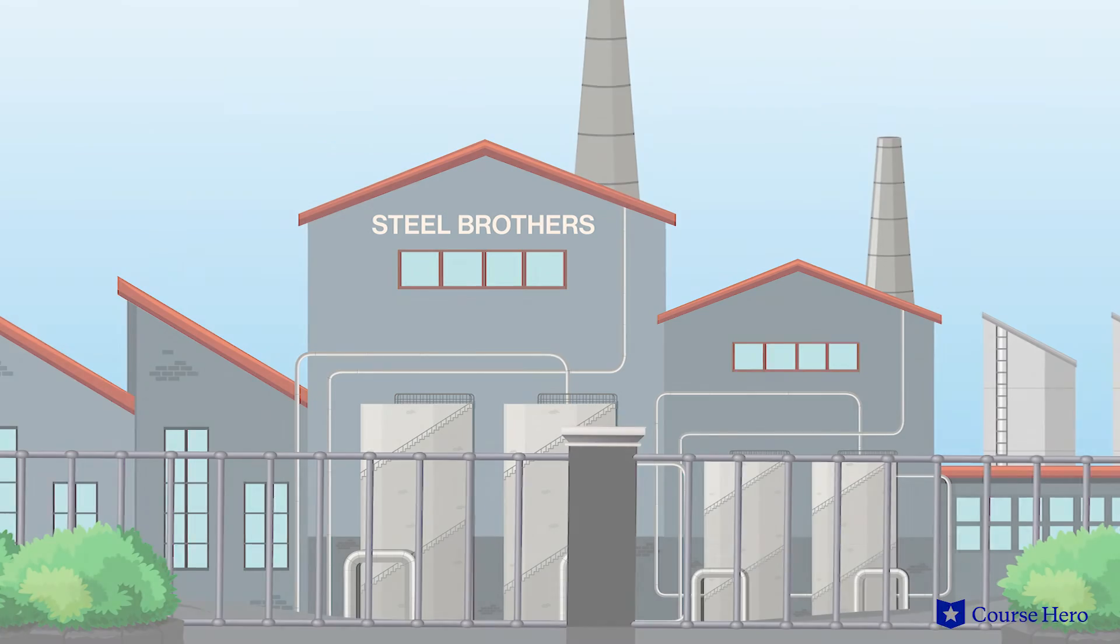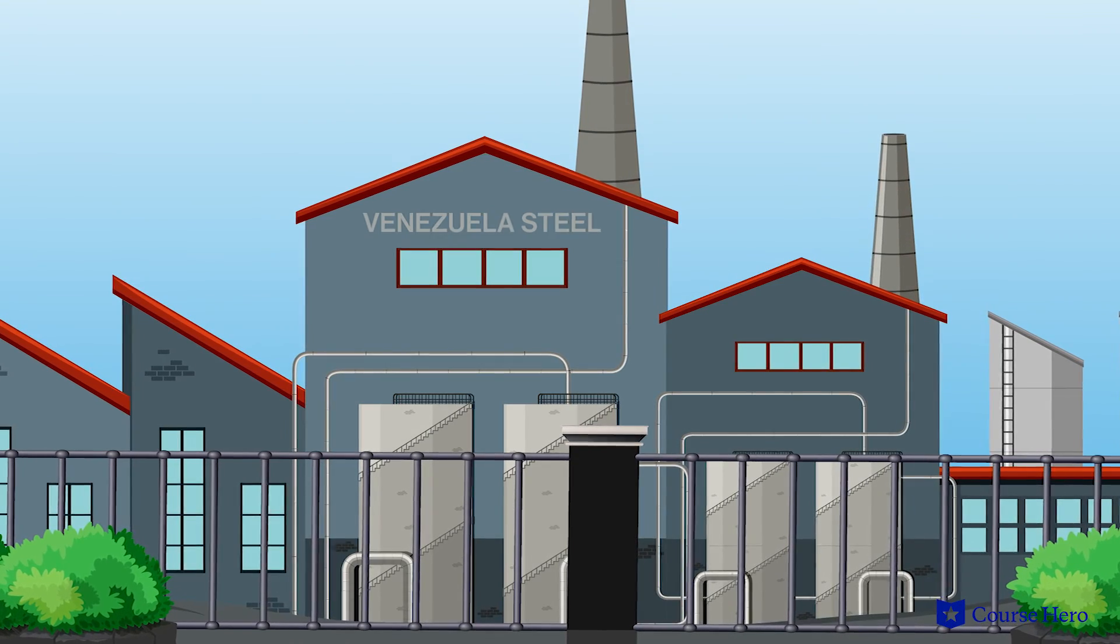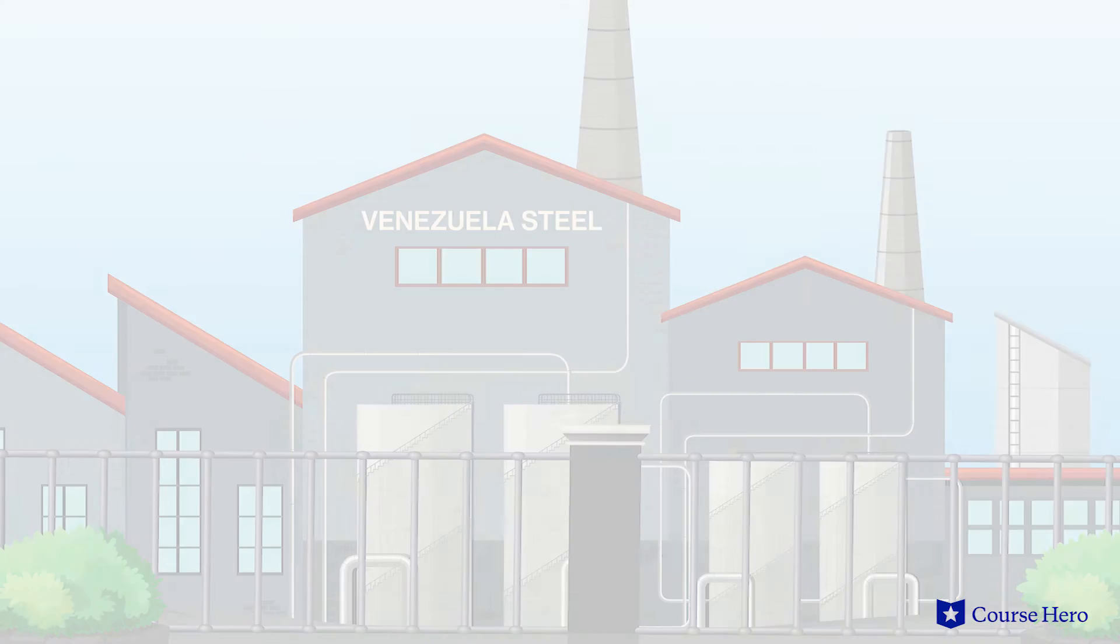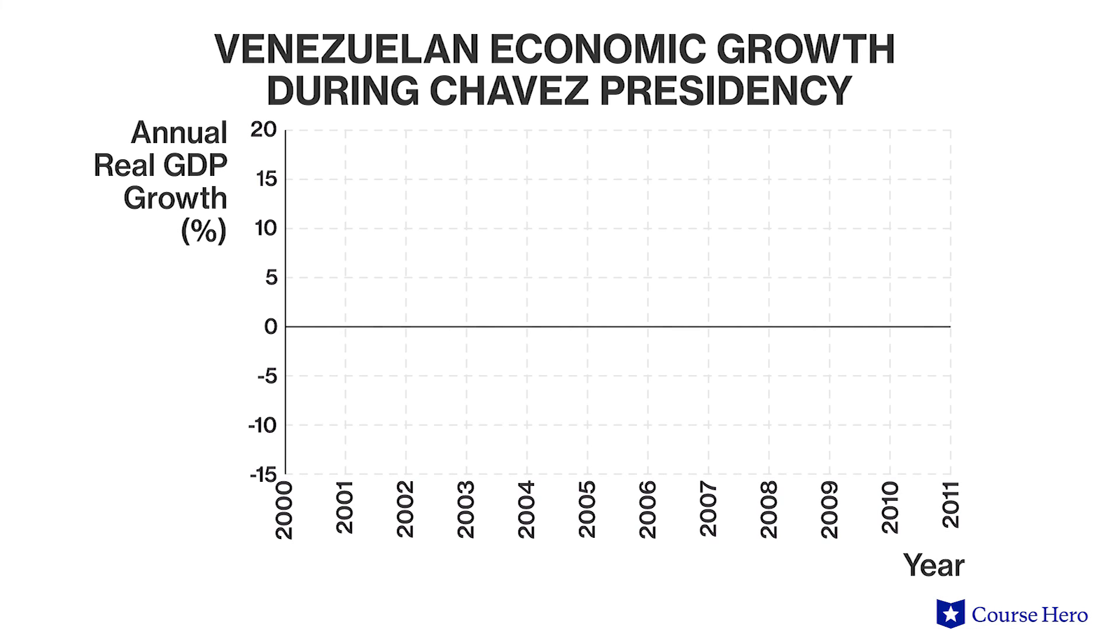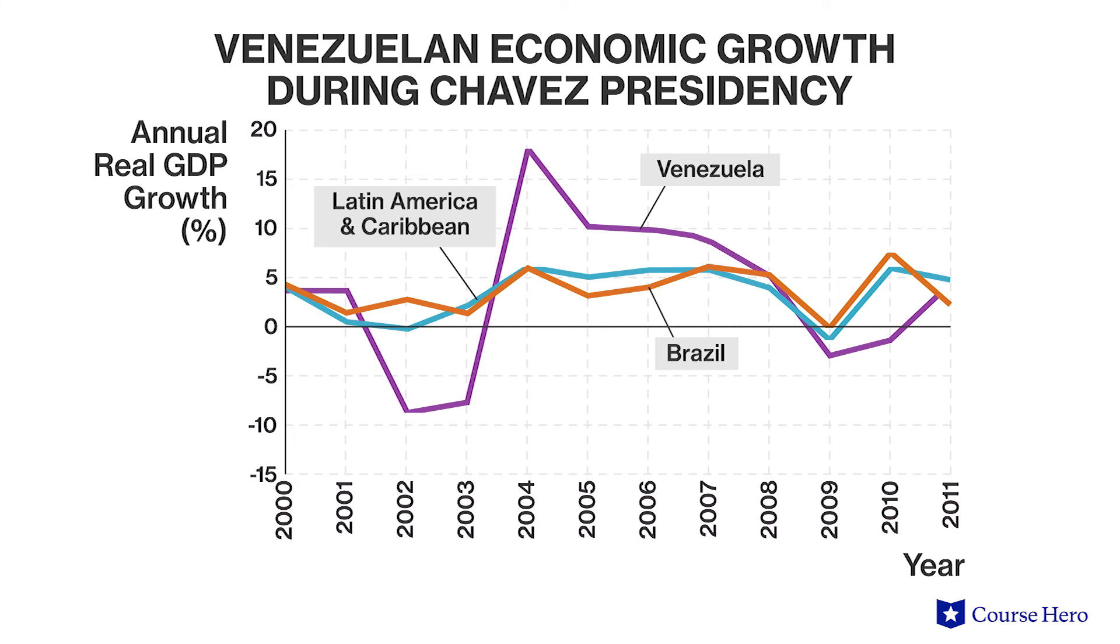During Hugo Chavez's tenure as the President of Venezuela, he nationalized many industries, making them a part of the government. Although there was some economic growth under Chavez, Venezuela experienced a drop in both the number of new domestic firms created and the amount of foreign investment from other countries who wanted to build new factories or businesses in Venezuela. No one was willing to invest because no one knew if Chavez would simply take their investment and make it part of the government.